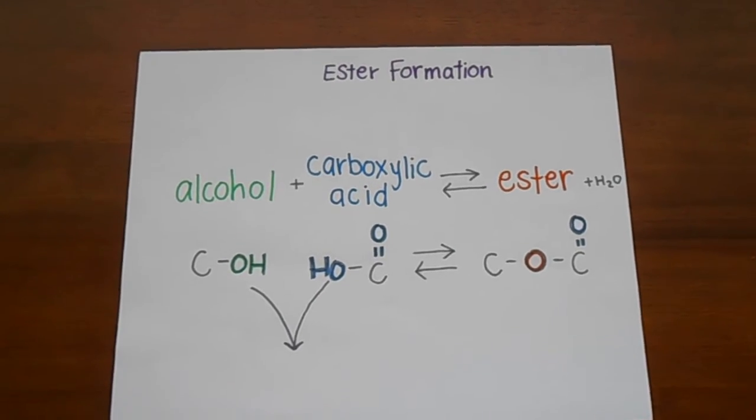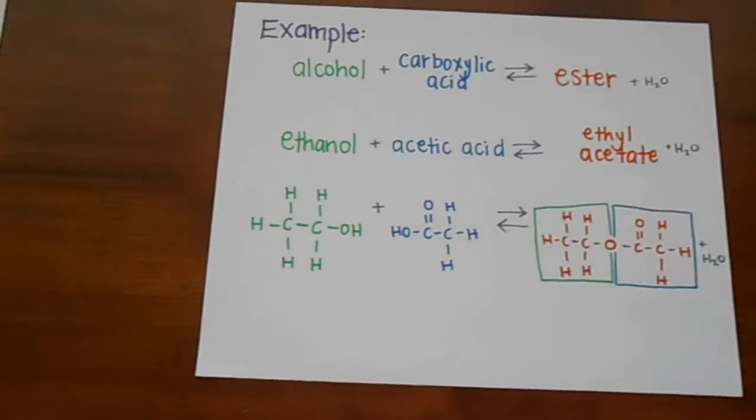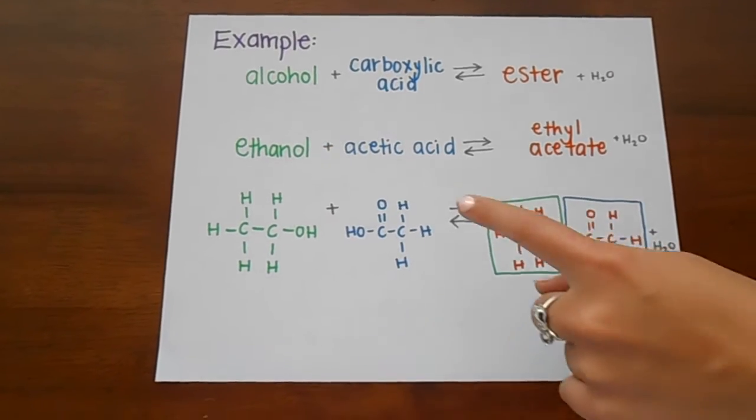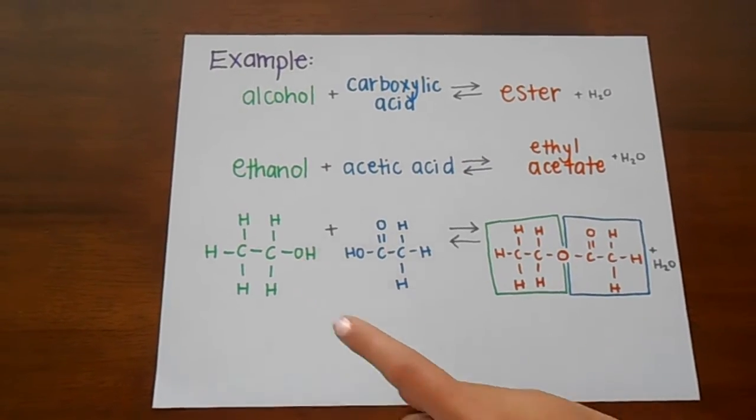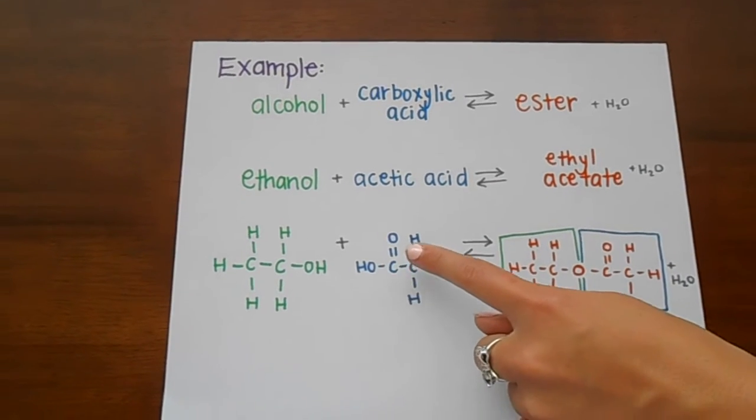If that was a little confusing, here's an example. We are going to combine ethanol with acetic acid. Notice that ethanol has an OH and acetic acid has an OH and double bonded O.